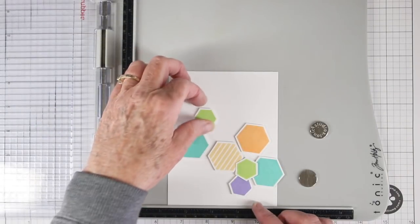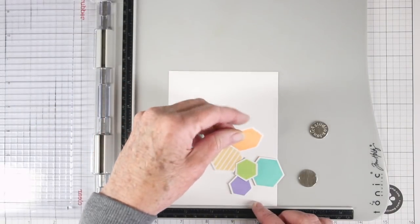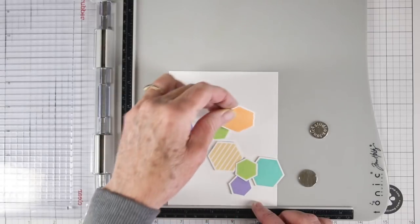I have die cut my hexes and I've put a piece of foam tape onto the back so I can lift these up off the background.